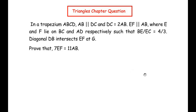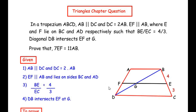For this question we have to draw a figure, so we will begin by writing the given information along with the diagram. We have drawn a trapezium ABCD with AB parallel to DC and DC equal to twice AB. EF is parallel to AB, with E and F on BC and AD, and BE over EC is marked as 4 over 3 on the diagram.